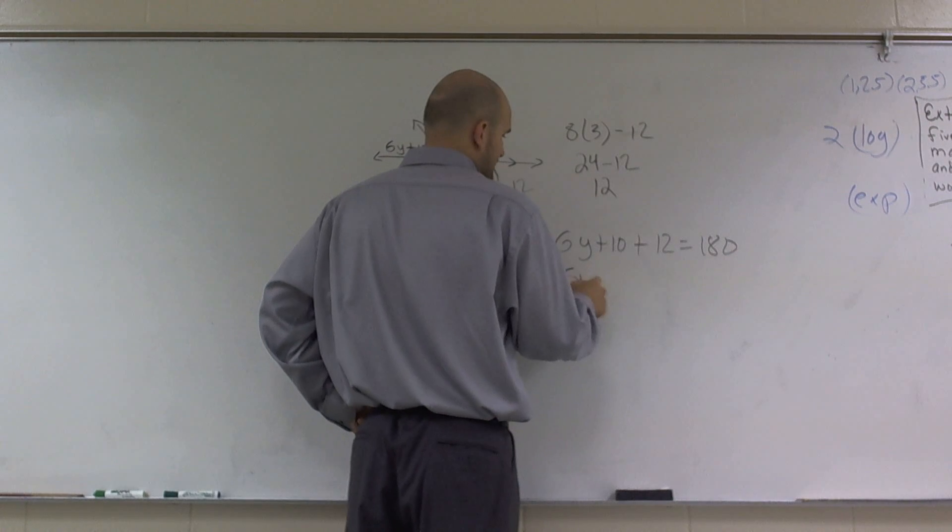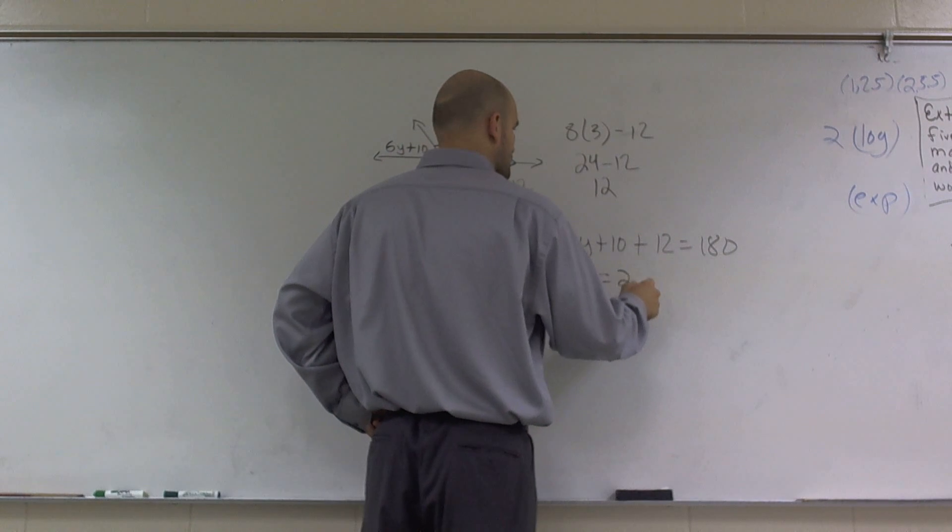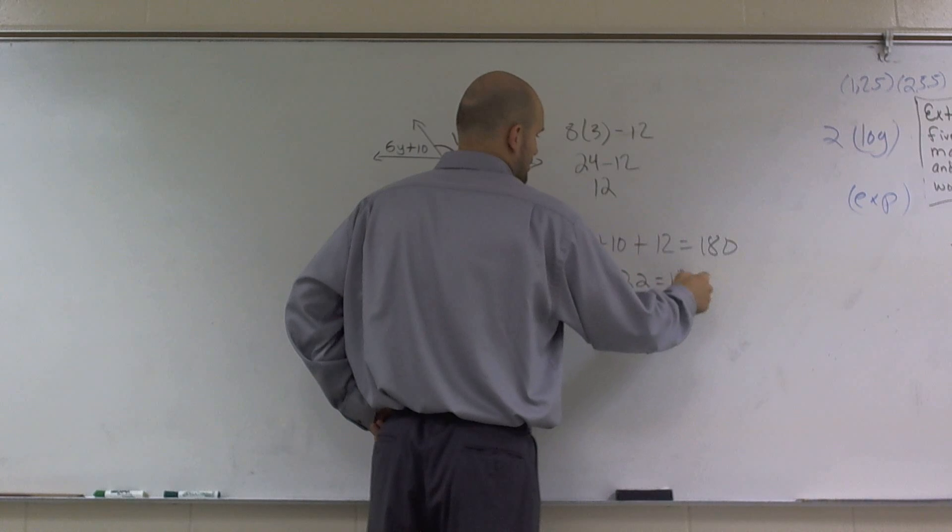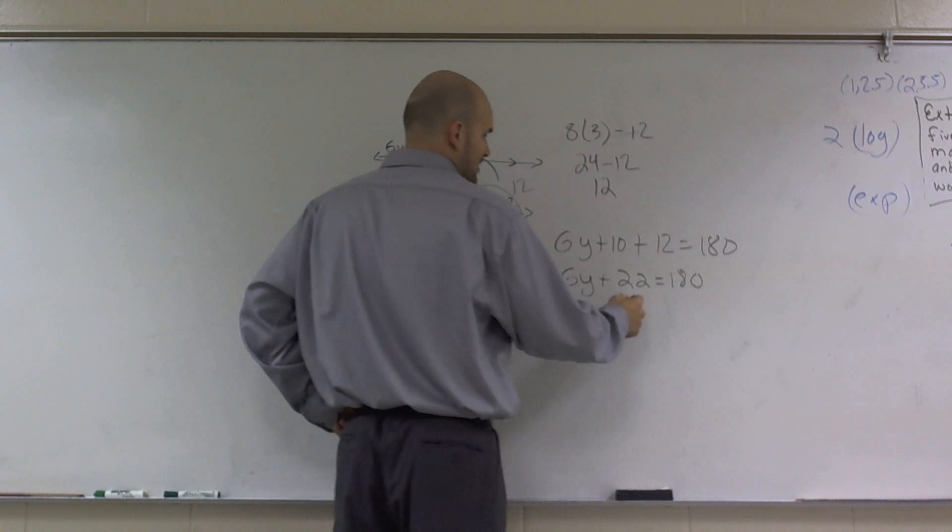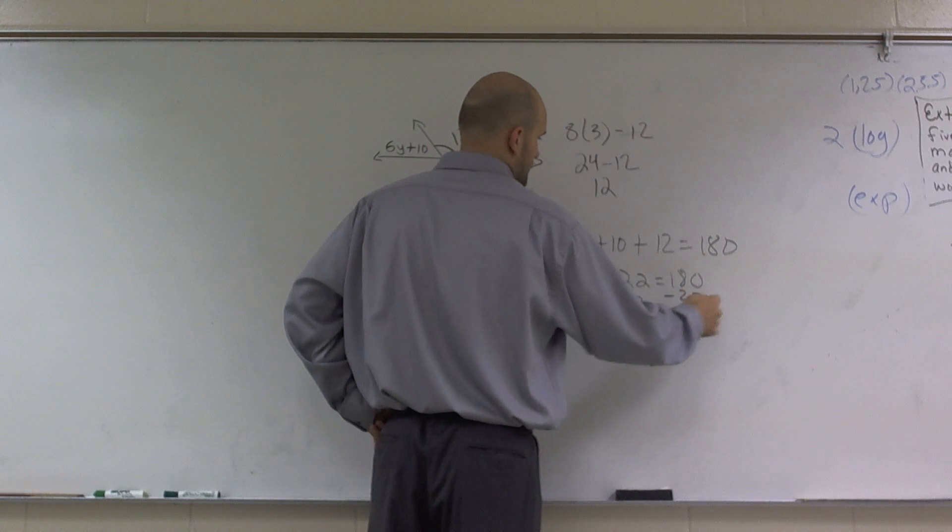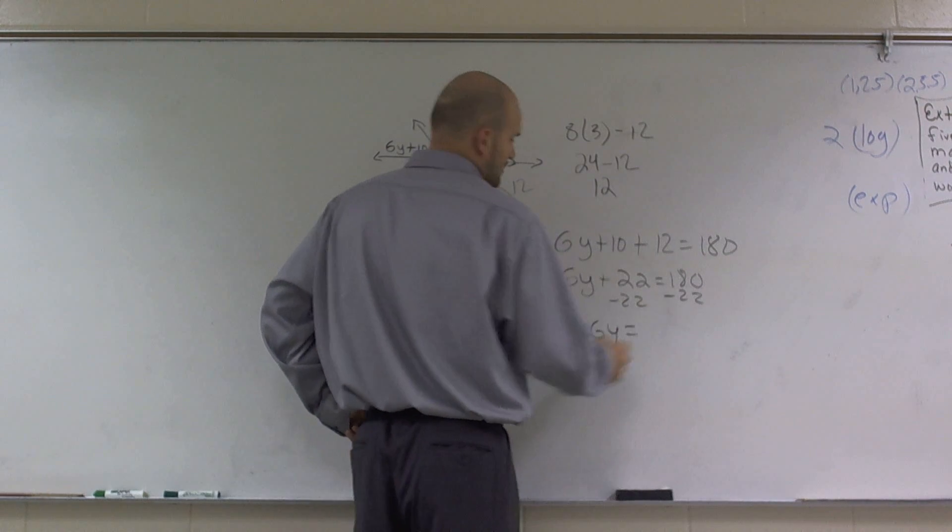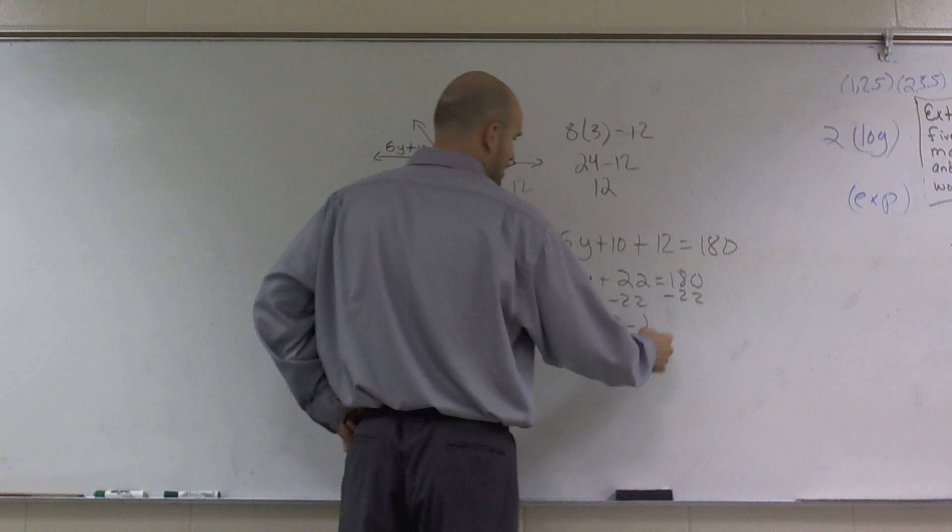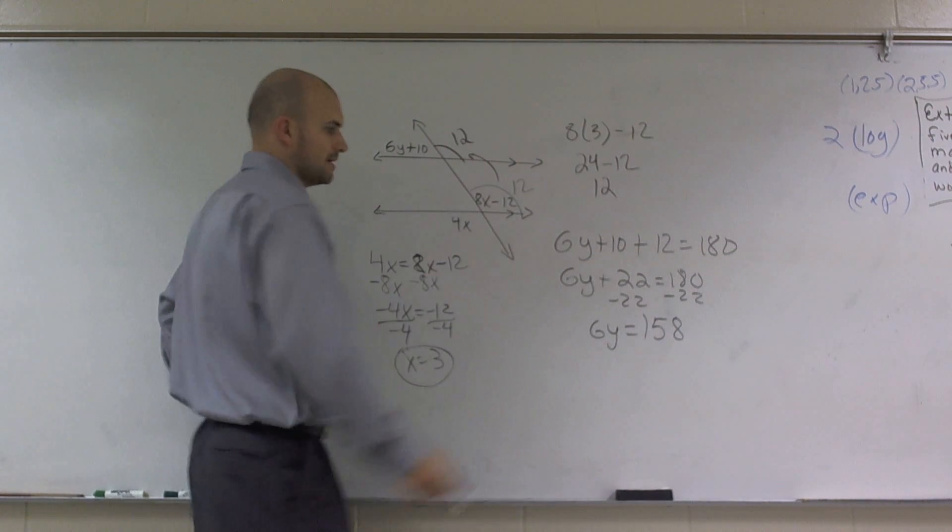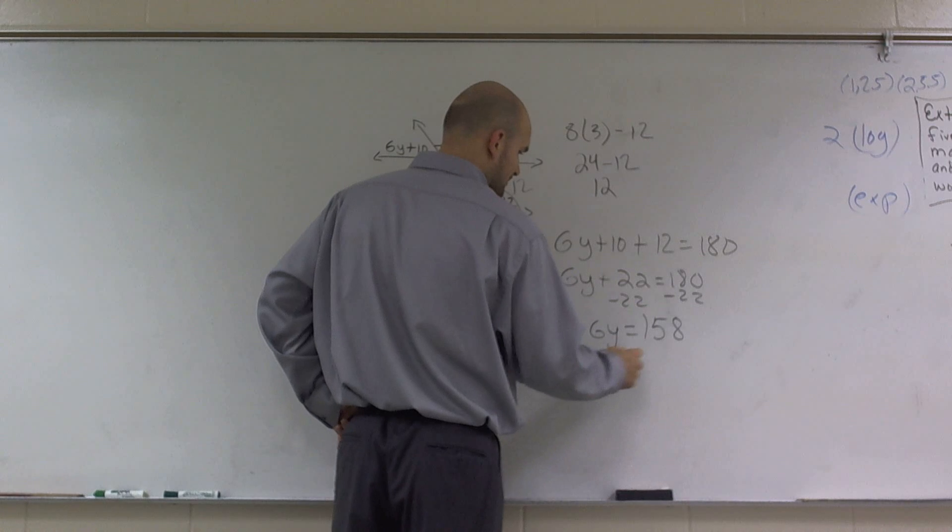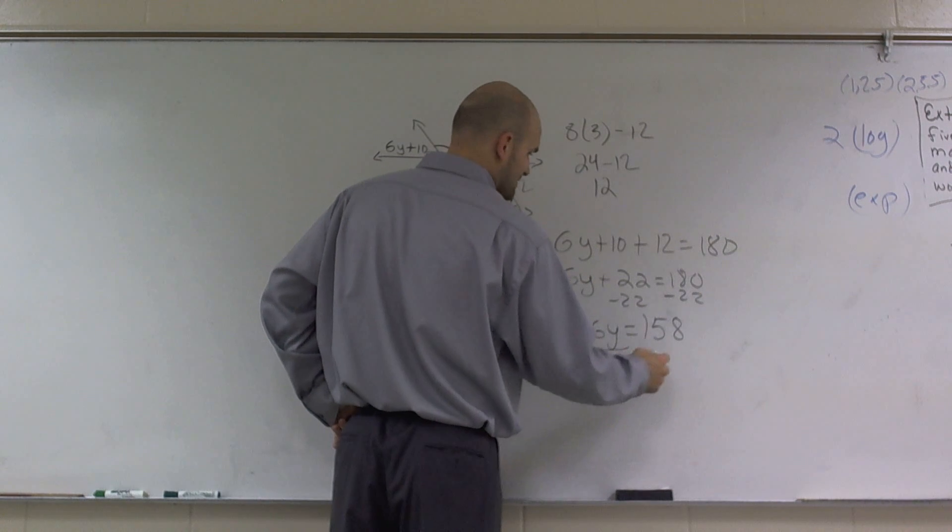So now I can write 6y plus 10 plus 12 equals 180 degrees. Then I'll combine. So I get 6y plus 22 equals 180. Subtract 22, and I will divide by 6.